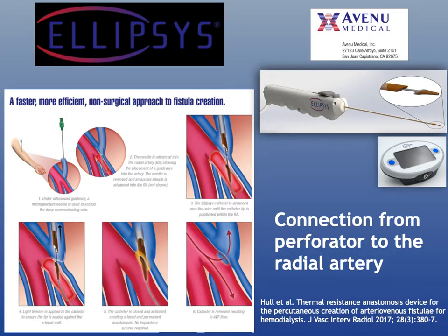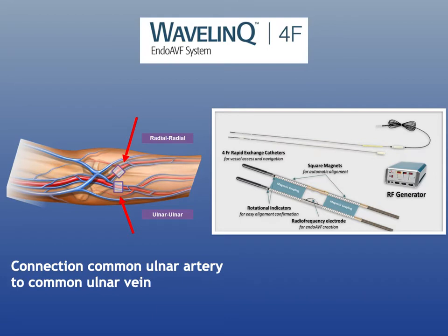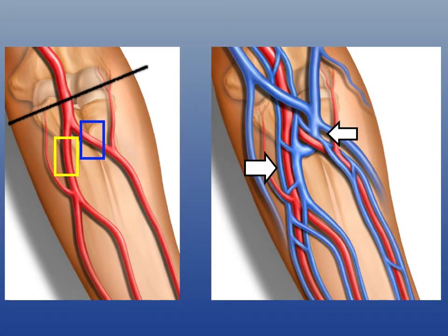With the Ellipsis device, you're creating a connection between the dominant perforator and the adjacent radial artery. With the Wavelength system, you're creating a connection between the common ulnar artery and the common ulnar vein. I'm going to focus on the Wavelength device, since this is the one I currently use.